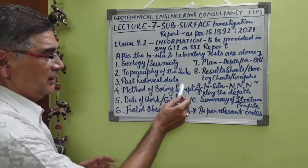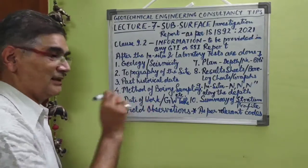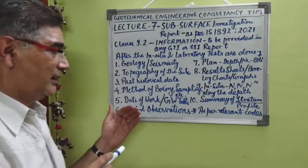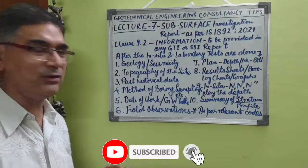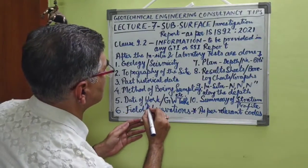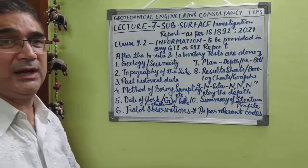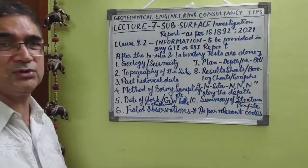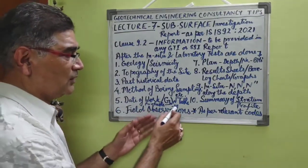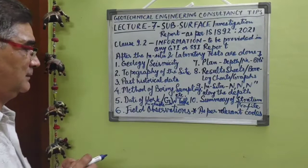Number five: we should definitely mention the date of boring, which should exactly define the week and month of that particular year. From this we can decide the probable post-monsoon water table rise, because the investigation may have been done before monsoon, just after monsoon, or three to four months after monsoon has passed. Whatever groundwater table we encounter at the site depends on the season in which we are doing the investigation — this is very important for shear and settlement calculations.